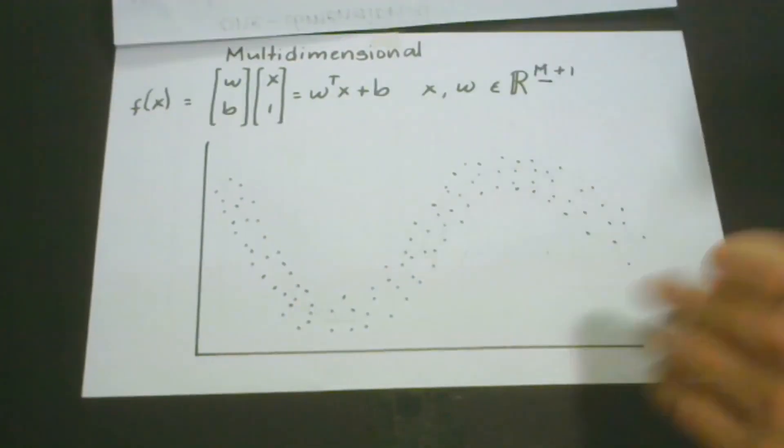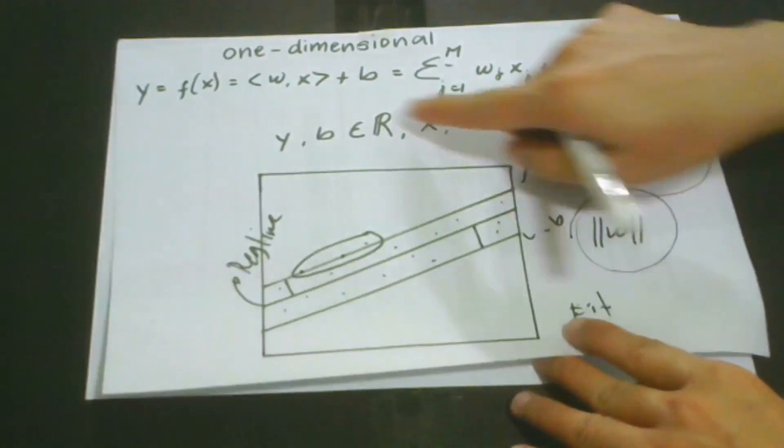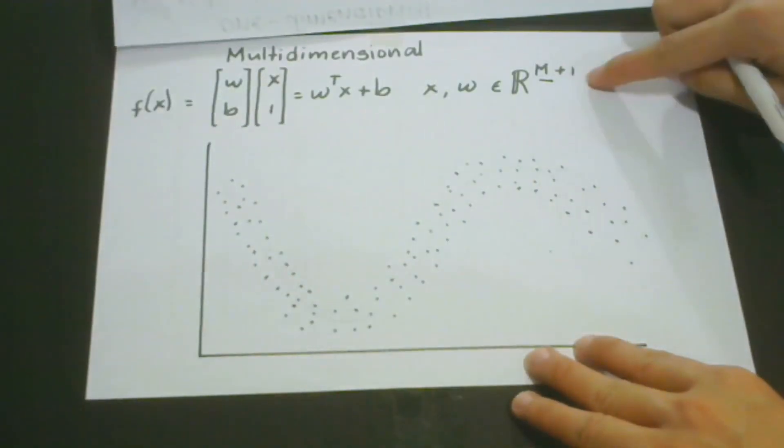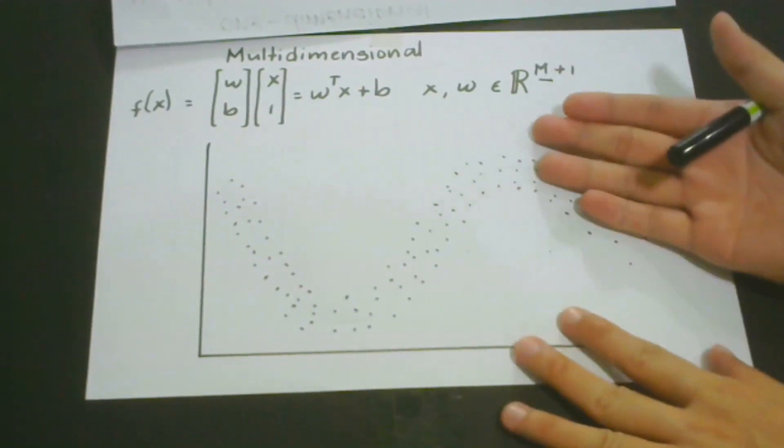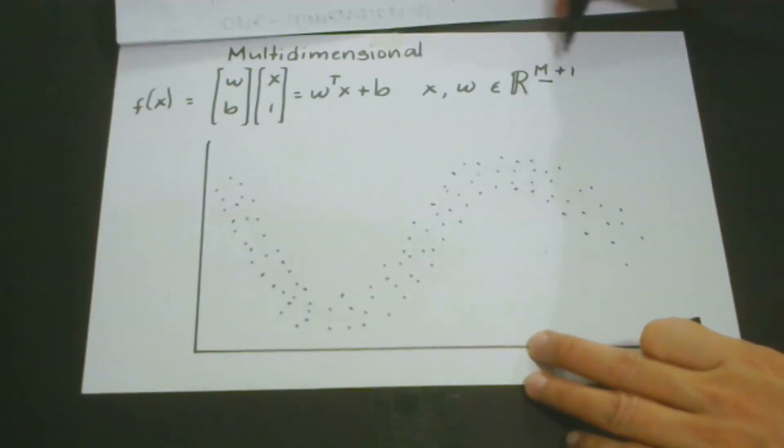m here represents the dimension that we have. Because we only have one dimension in the one-dimensional case, we don't have any plus one. In the multidimensional case, because we have a lot of dimensions, we're going to do plus one, or as many features we have in our dataset. This approximates the polynomial function that we use in our model.